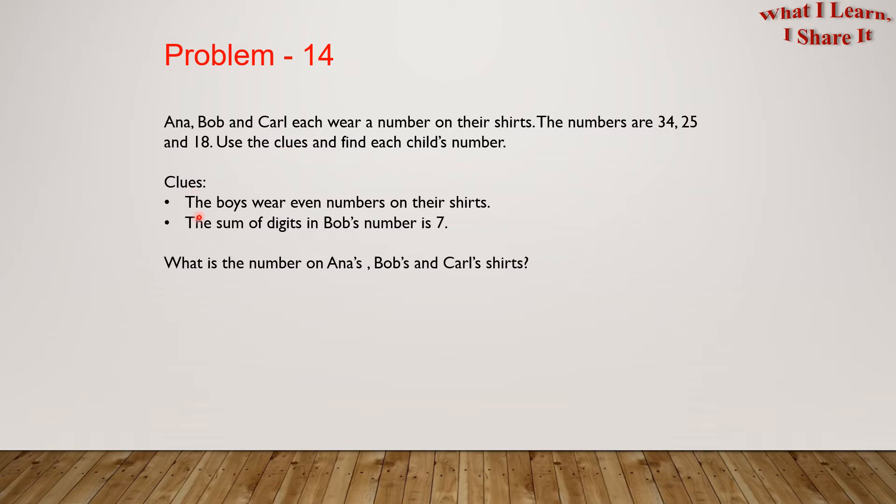Use the clues and find each child's number. Clues. The boys wear even numbers on their shirts. And the sum of the digits in Bob's number is 7. What is the number on Anna's, Bob's, and Carl's shirts?